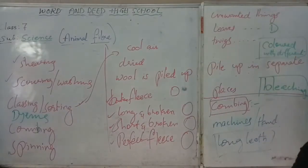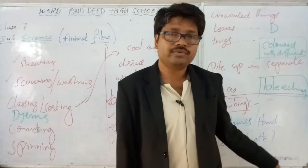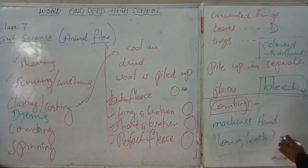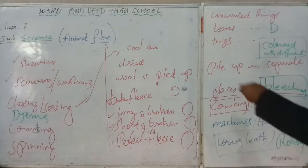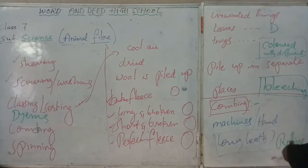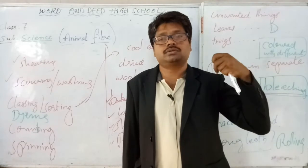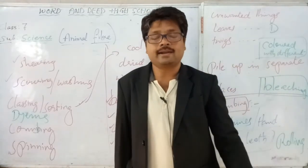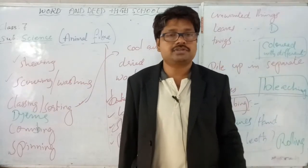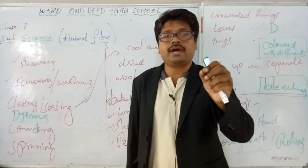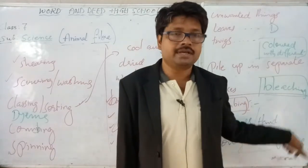After the wool is combed, it is rolled like a rope using a machine — we can call them rollers. Rolling is done and the wool comes out like a big rope with the help of a rolling machine, drawn between the rolls. Once it is rolled out like a big rope, another machine takes a few fibers from the big rope, twists them, and makes a thread. This process is called spinning.